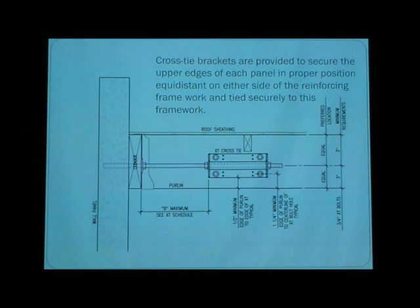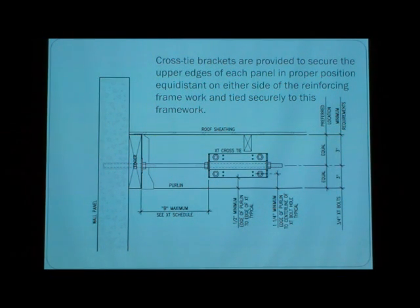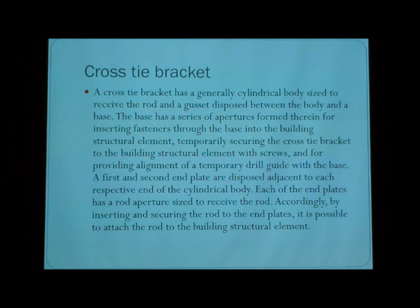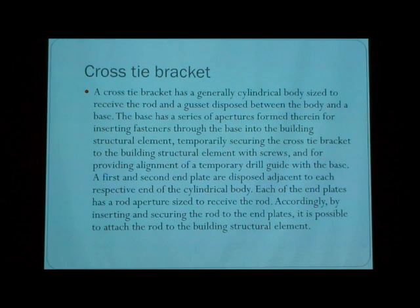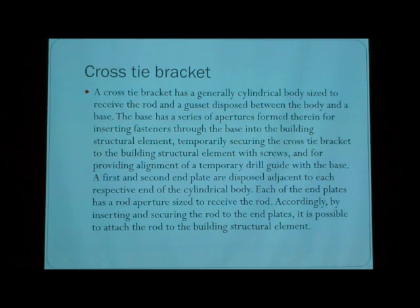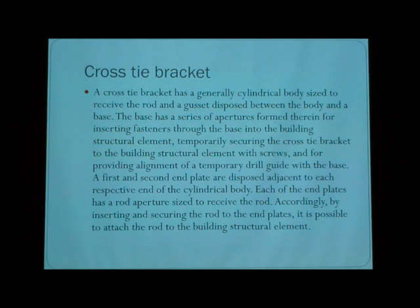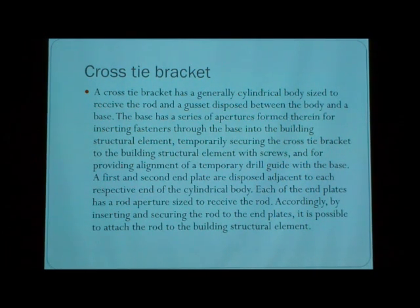A very important detail of the composite wall is the cross-type bracket. You can see from the definition that a cross-type bracket has a generally cylindrical body sized to a base. The base has a series of approaches for building or inserting fragments of the base into the building structure element.